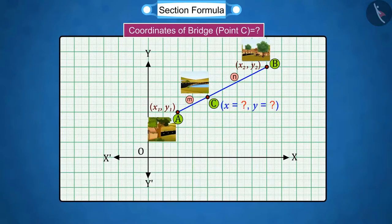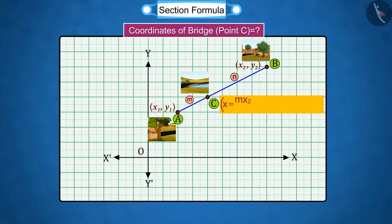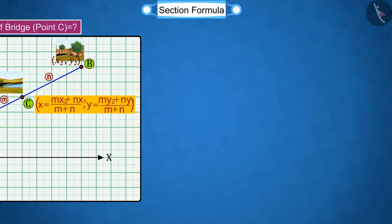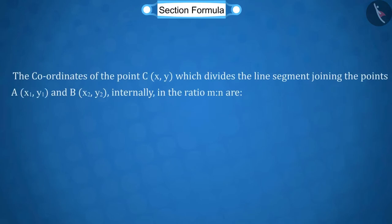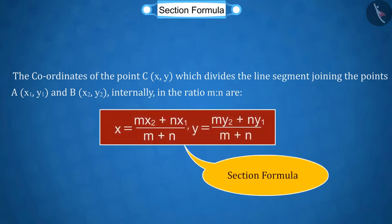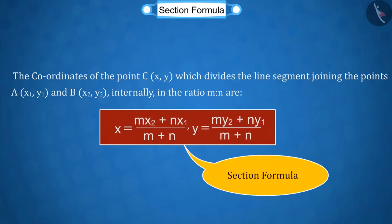So we can say that the coordinates of point C where the bridge is to be constructed are MX2 plus NX1 upon M plus N, and Y equals MY2 plus NY1 upon M plus N. We saw that the line segment AB that connects the two points A and B is internally divided in the ratio M is to N by point C whose coordinates are these, which is also called the section formula.